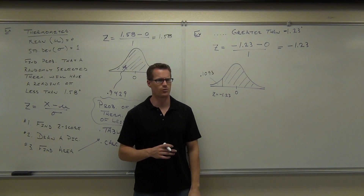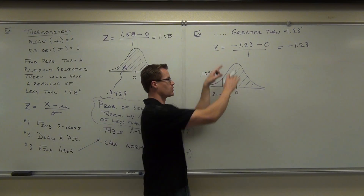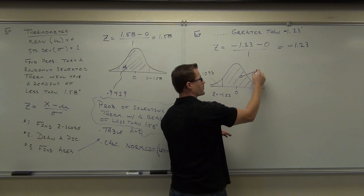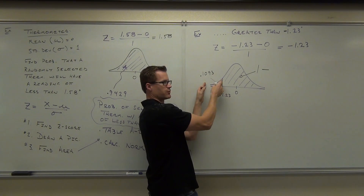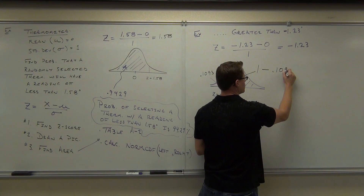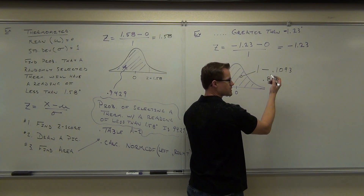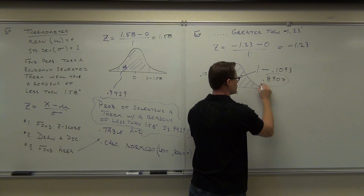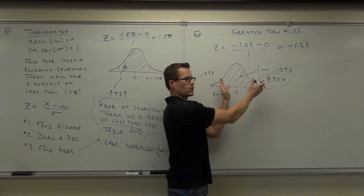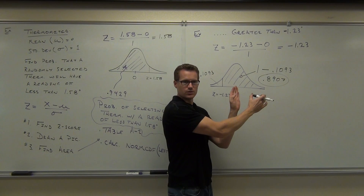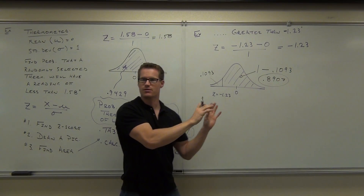Subtract that from 1. Why? That's the whole reason why we said the total area equals 1, right? So if this whole area is equal to 1, then the area that we want is 1 minus. They're complementary areas — they have to add up to 1. If this is a little bit of 1, this is the rest of it. In other words, you're going to get 0.8907. That's your area. That's your probability. Notice how this is the area I wanted — it wasn't to the left. Your table will only give you the area to the left. If you're not looking for the area to the left, you've got to subtract it from 1. Subtracting from 1 gives you the area to the right.